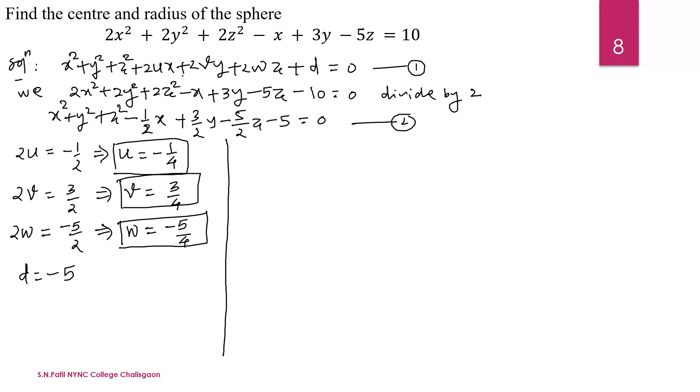In the general form, the center of the sphere is (-u, -v, -w). Now we already calculated the u, v, w. Substitute here minus and here the u also -1/4, comma -v is 3/4. W is equal to minus and which is -5/4. Now simplify. The required center is minus minus plus 1/4. Here -3/4. And here minus minus plus, that is 5/4. Which is center of the sphere.